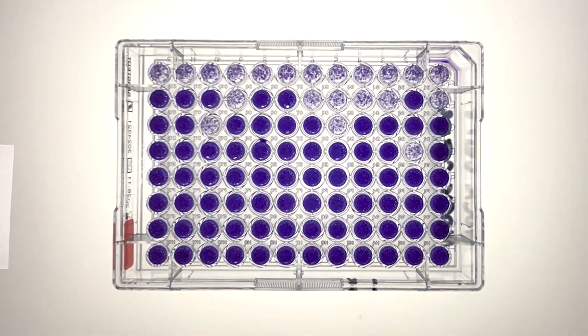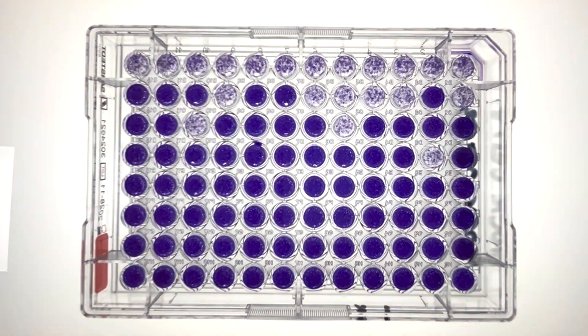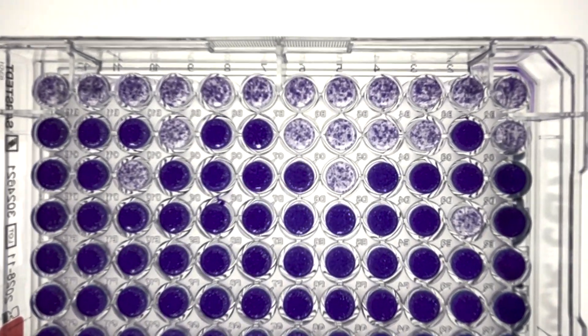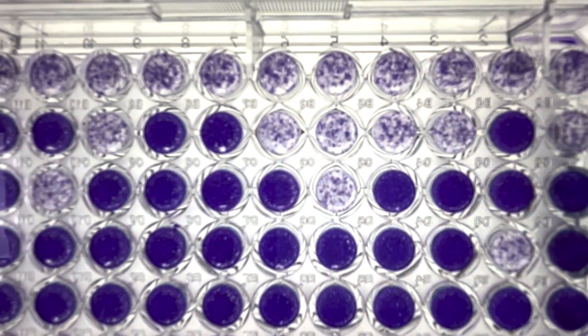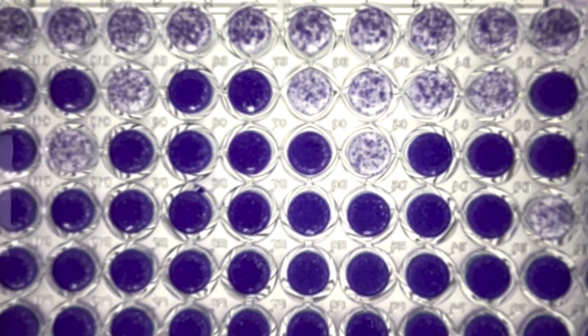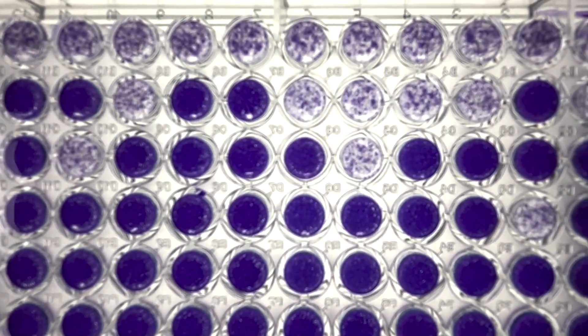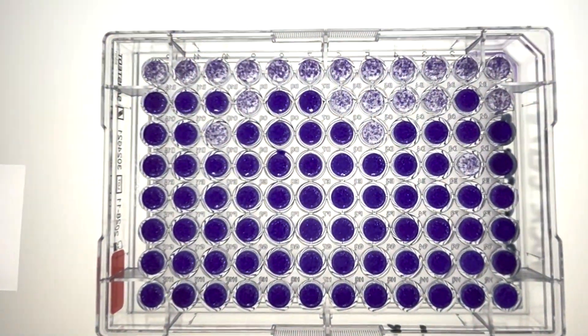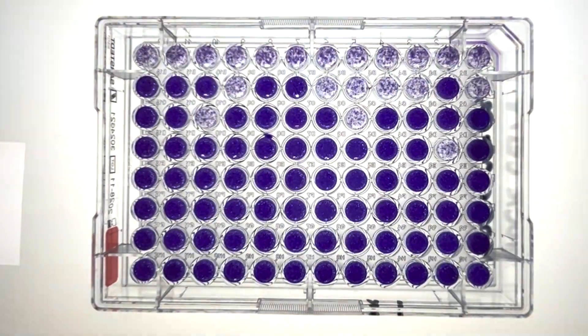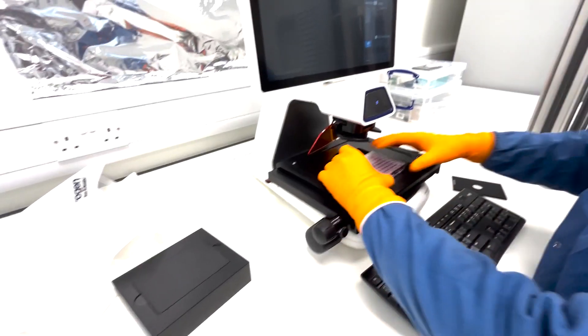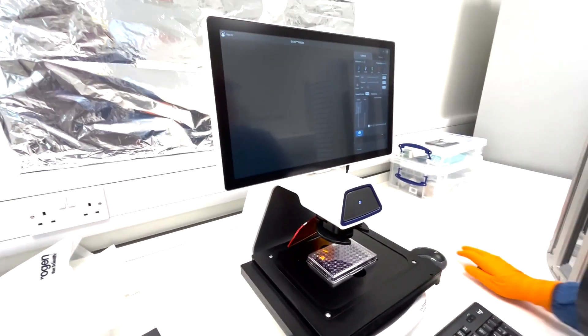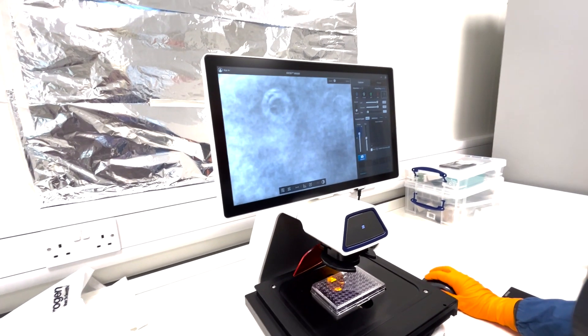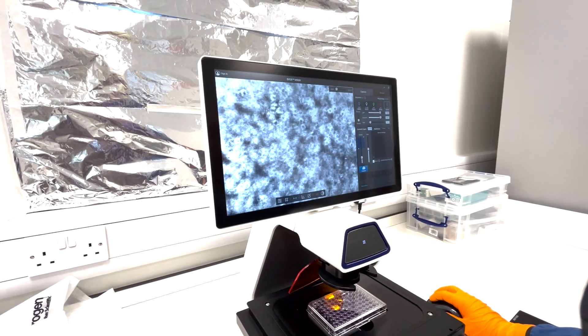The next step in our process is to meticulously score the wells. We're looking for signs of infection, which are typically indicated by the absence of cells or disrupted patches in the monolayer. This is where the crystal violet staining becomes invaluable. It helps us clearly identify which wells have been compromised by the virus. If any results are unclear or require further examination, we take a closer look under the microscope to ensure accuracy in our observations.